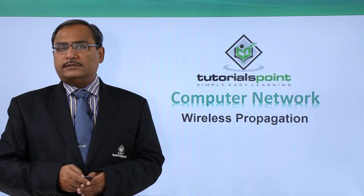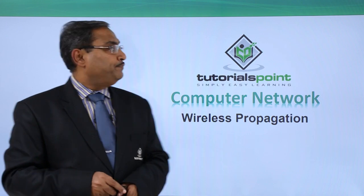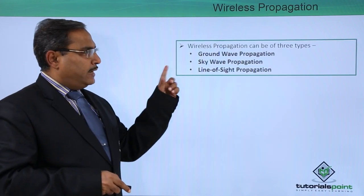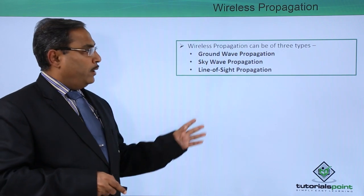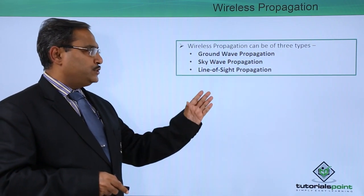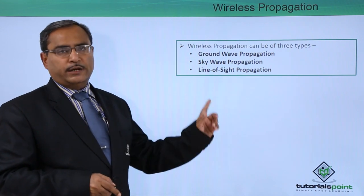In this video, we are discussing wireless propagation. Wireless propagation can be of three types: ground wave propagation, sky wave propagation, and line of sight propagation.